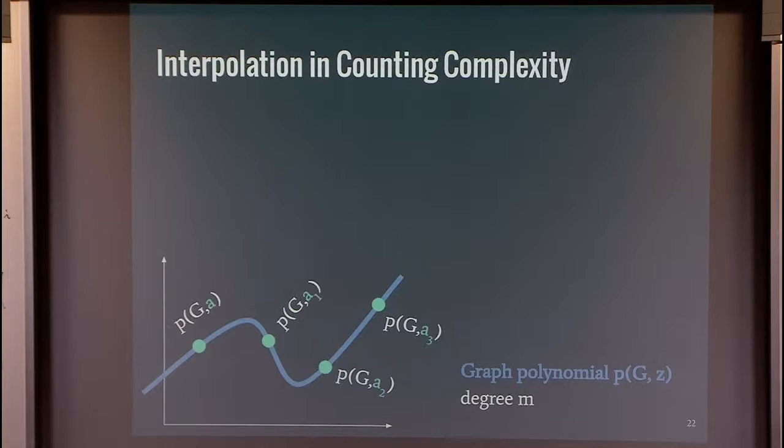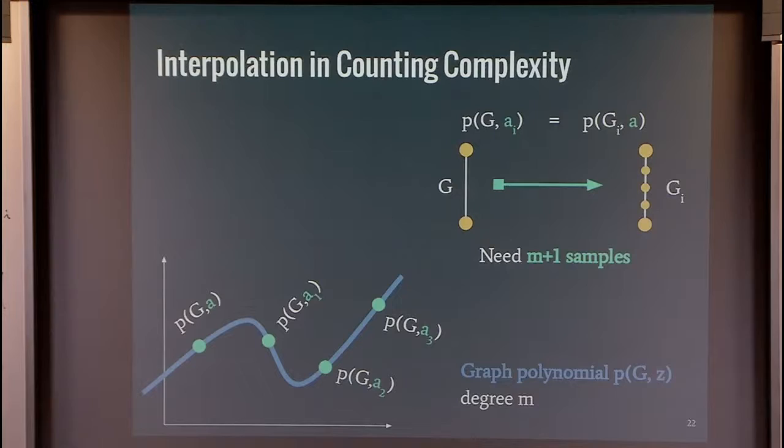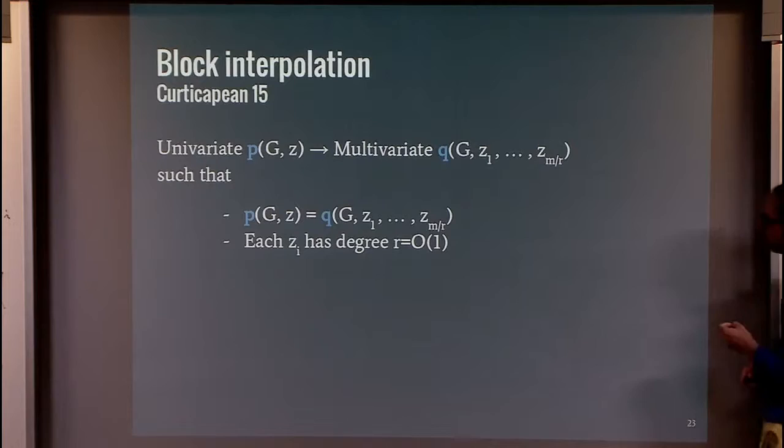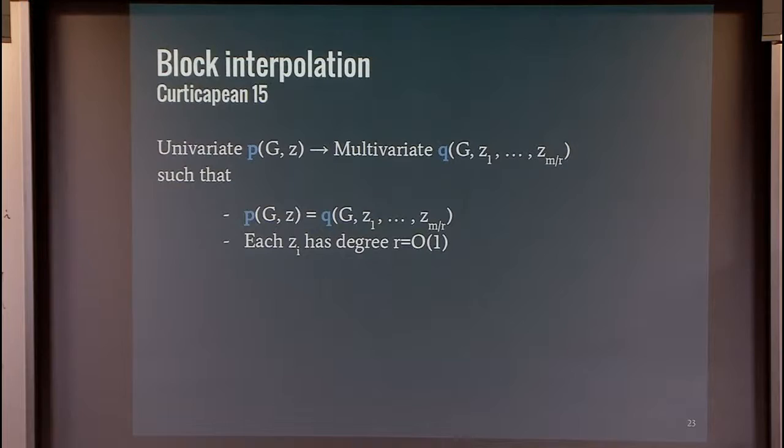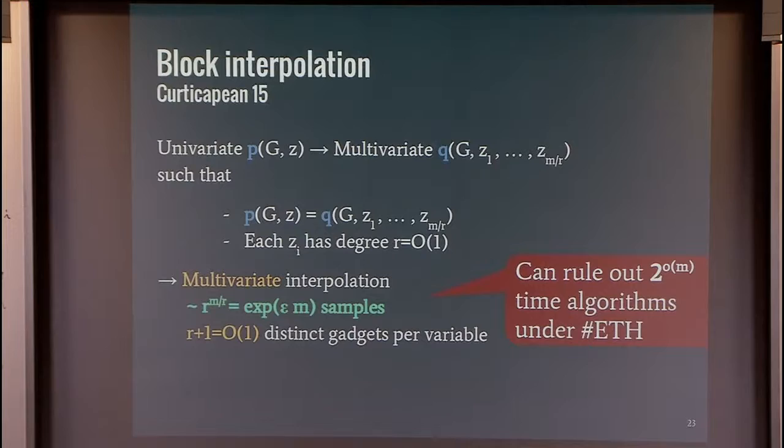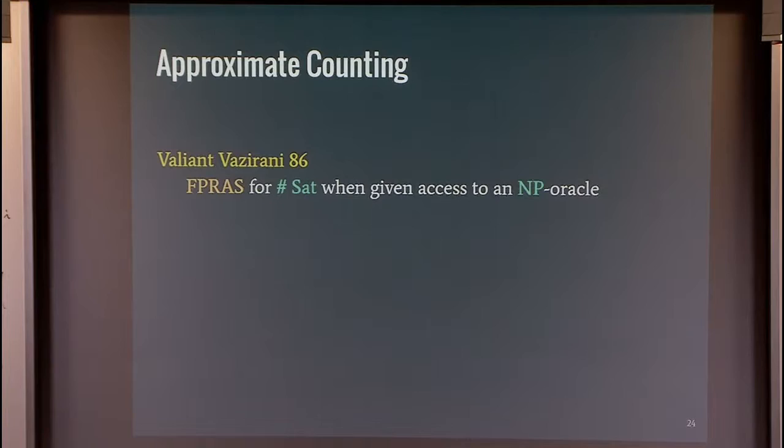Here I wanted to say, I'm running out of time, so I wanted to say something about block interpolation, which Radu introduced to prove the previous result. The basic idea is that instead of looking at univariate interpolation, you look at multivariate interpolation. And you make sure that every variable you use in the interpolation has a constant degree. Then this allows you to only use a constant number of different gadgets in the reductions. You don't need a large number of different gadgets. And this technique can be used to rule out sub-exponential time algorithms.